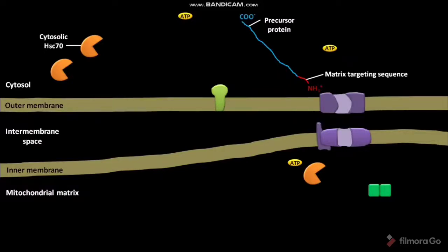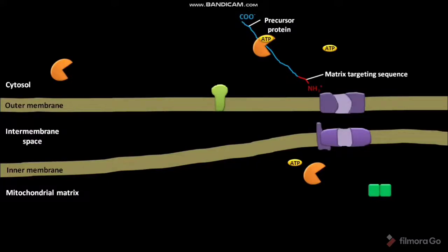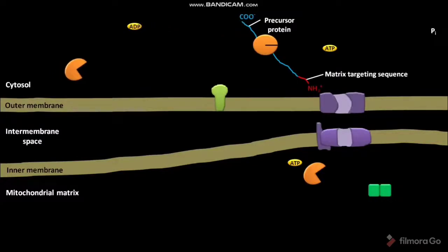The cytosolic hsc70 then attaches to the nascent precursor protein. hsc70 is a type of chaperone protein. ATP then binds to the attached hsc70 and undergoes hydrolysis to produce ADP and Pi. Due to this ATP hydrolysis, the conformation of hsc70 is changed, causing it to bind to the nascent precursor protein. The ADP and Pi are then released into the cytosol.